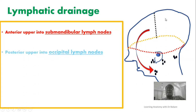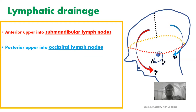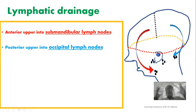The posterior upper region at the back is drained into the occipital lymph nodes. The occipital lymph node is located at the posterior part. So the lymphatic drainage of the posterior upper region of the scalp is collected into the occipital lymph nodes. This covers the upper part of the scalp.